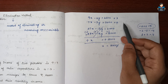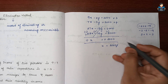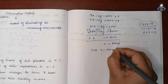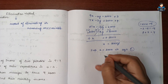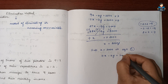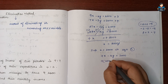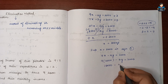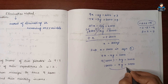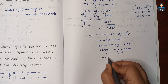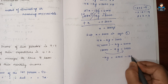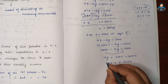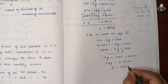Now we substitute x equals 2,000 into Equation 1: 9x minus 4y equals 2,000. So 9 into 2,000 minus 4y equals 2,000, which gives 18,000 minus 4y equals 2,000. Moving 18,000 to the right side: minus 4y equals 2,000 minus 18,000 equals minus 16,000. So 4y equals 16,000, giving y equals 4,000.